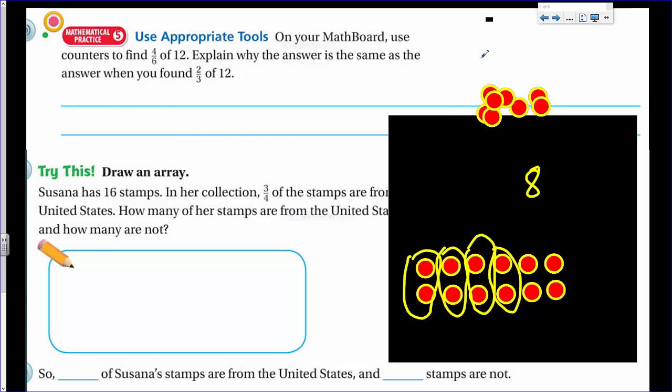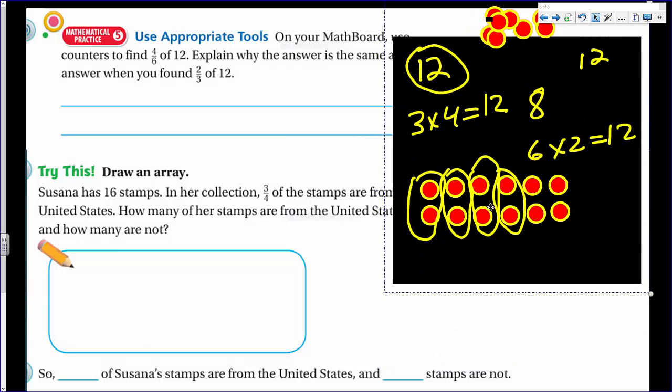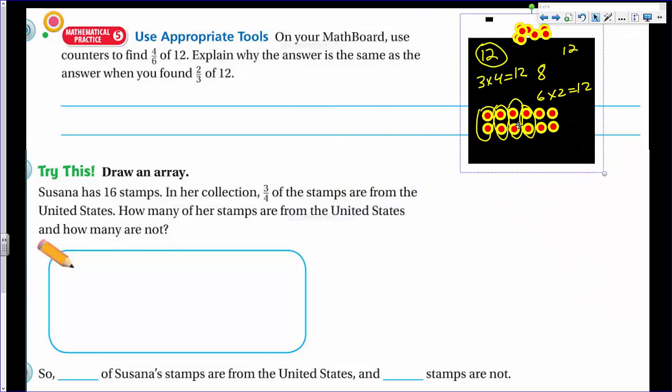It says explain why the answer is the same as the answer when you found two thirds of 12. I'm going to say this and not have time to type this in, but I will vocalize this. You guys can write this in the blank. It's the same because my number of stamps or counters are the same. I still have 12. That didn't change. The previous problem I had 12, this one I have 12. Well, then why does this look different? The arrangement of the rows is different. Here we have six times two, which equals 12. So we actually have six rows of two, or you could say two rows of six. And this is the one that we had three rows of four or four rows of three, also 12. So 12 is a composite number and it has more than two factors. Therefore we have different combinations.